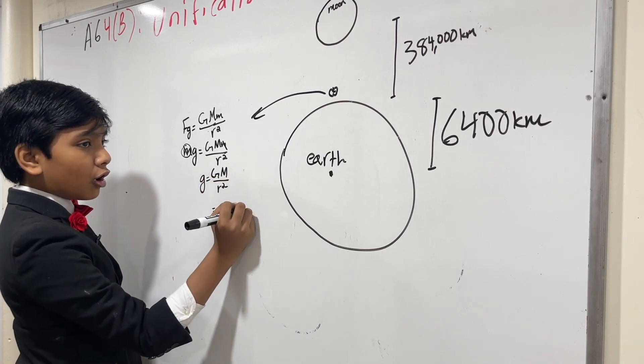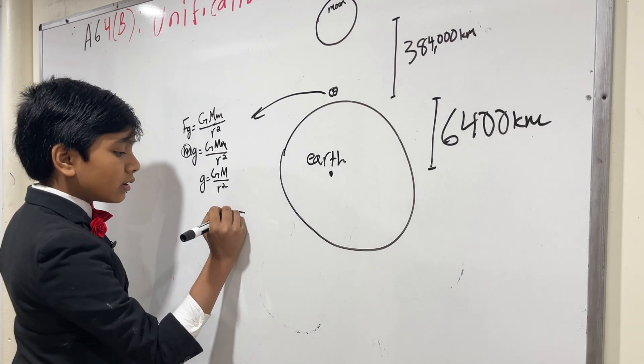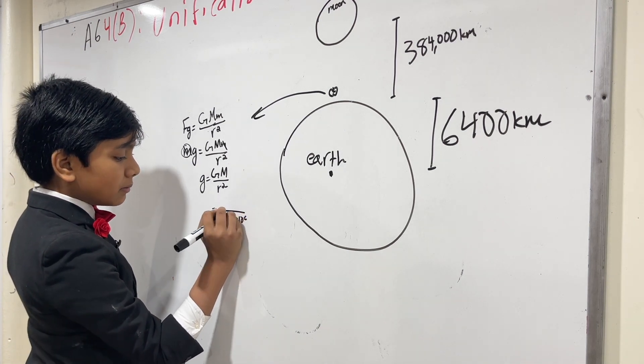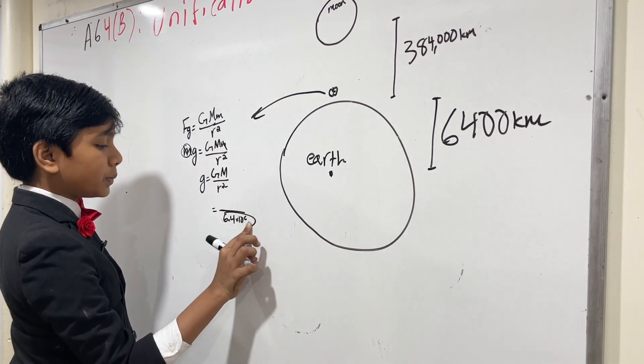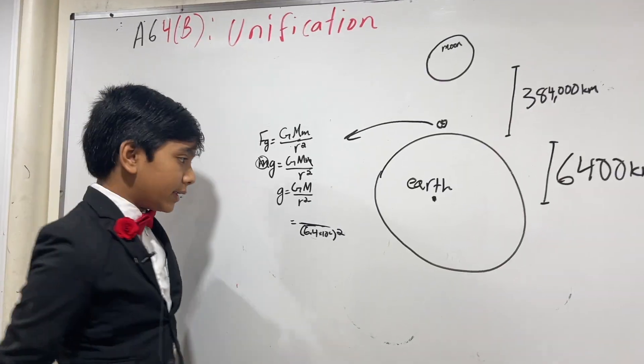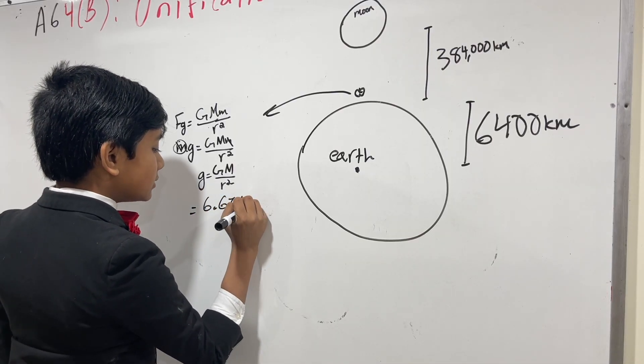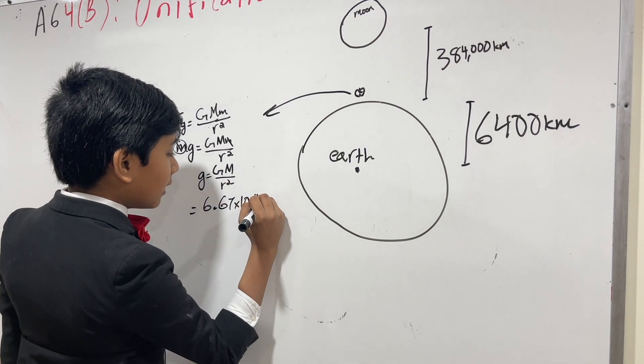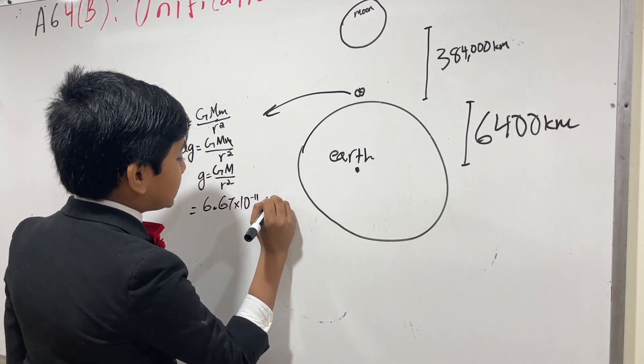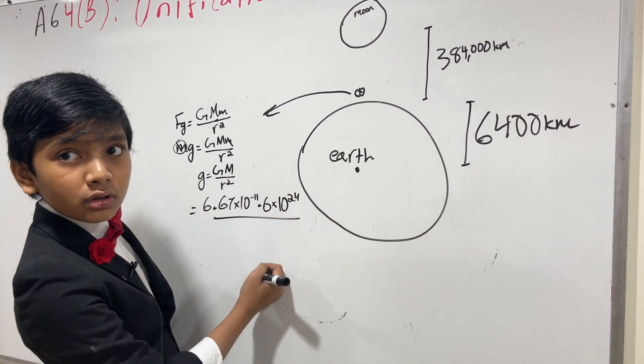And we know our r is just our 6400 kilometers or 6.4 times 10 to the 6 meters. Oh no, we're not going to put a circle around it. We're going to put some parentheses around it and square it. So we have our g on the top, 6.67 times 10 to the minus 11th. Times our M, which is, we'll just say 6, even though it's actually 5.98, times 10 to the 24th.